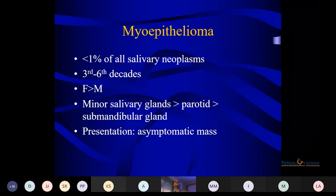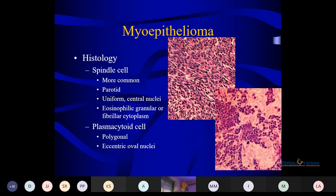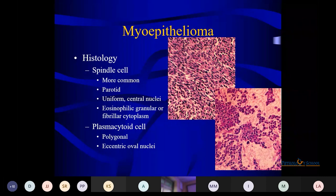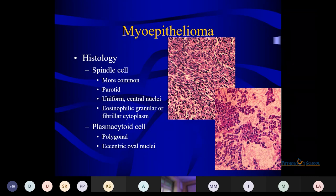Myoepithelioma — this tumor has only myoepithelial cells. It is common in the 3rd–6th decades, more in females. Minor salivary glands are the predominant site, though parotid and submandibular glands are also affected. In benign nature, they present as asymptomatic masses. Histologically, streaming of monomorphic spindle cells without any definite pattern is seen. You should assess whether cells are epithelial or myoepithelial in nature. If monomorphic gland or spindle to plasmacytoid cells are seen, the first thing that comes to mind is myoepithelial cell origin — it can be myoepithelioma or, depending on atypia, mitoses, and necrosis, myoepithelial carcinoma.